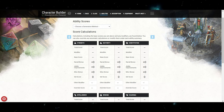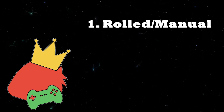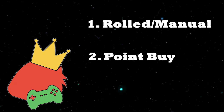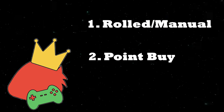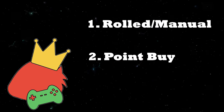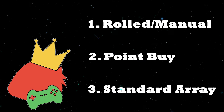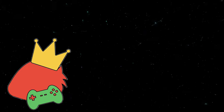It's ability score time! There are three common ways to make ability scores, and I will order them from which ones I think are best to worst — which also happens to be objective fact, because I determine all things. The first is rolled or manual, where you roll dice like the game was meant to be played. The second is point buy, where you spend points for balancing reasons. And the last is standard array, where you were too lazy to create the numbers and have it already done for you.